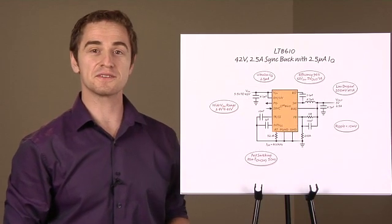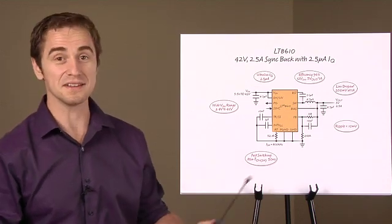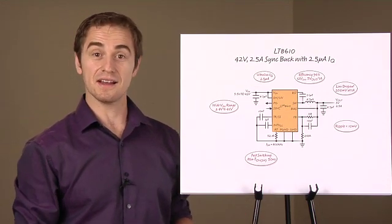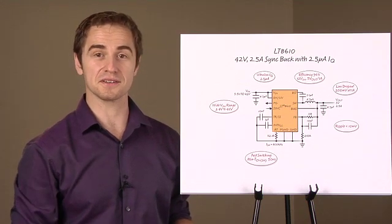In summary, the LT8610 offers many great features all combined in one small IC. This includes wide VIN range, high efficiency, a simple application circuit and ultra-low quiescent current.